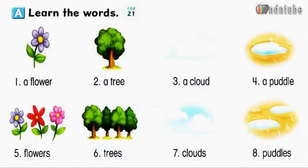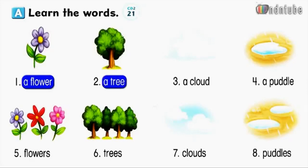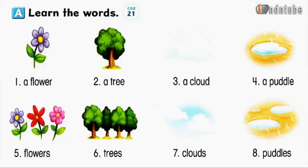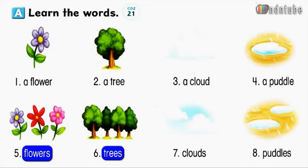Page 50. Let's learn. A. Learn the words. Number 1: a flower. Number 2: a tree. Number 3: a cloud. Number 4: a puddle. Number 5: flowers. Number 6: trees. Number 7: clouds. Number 8: puddles.